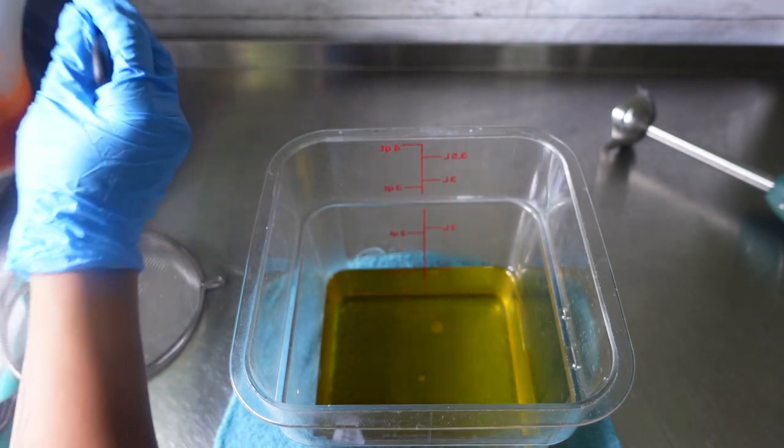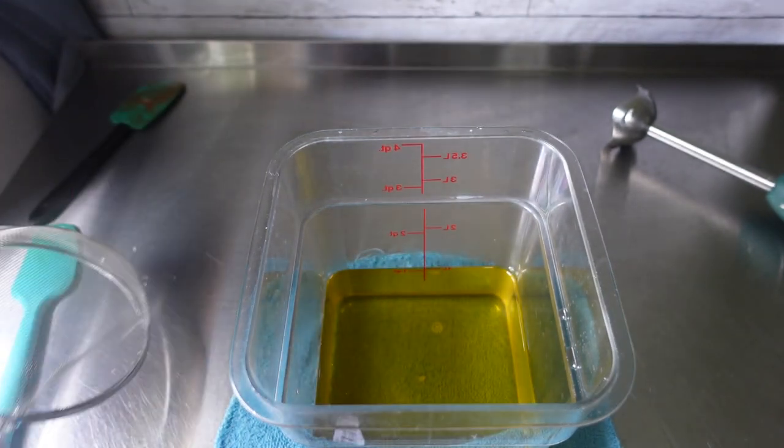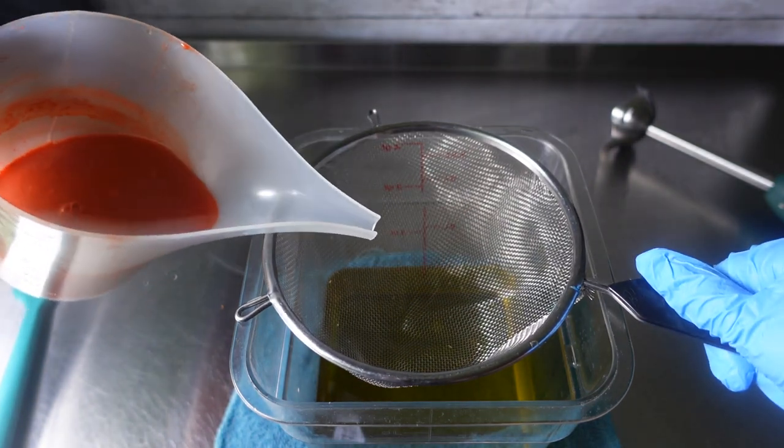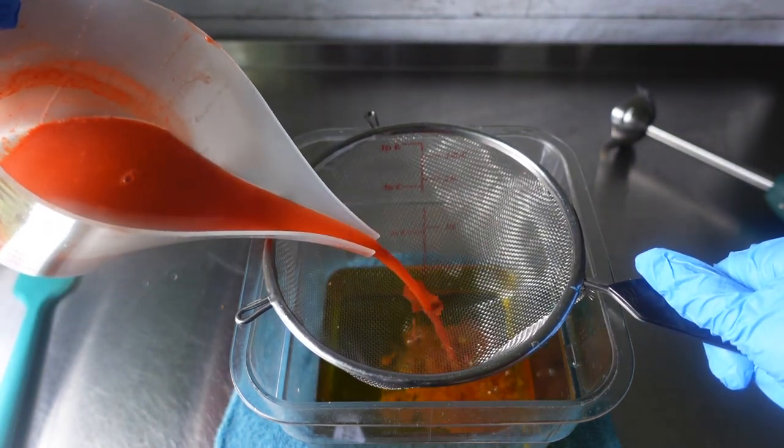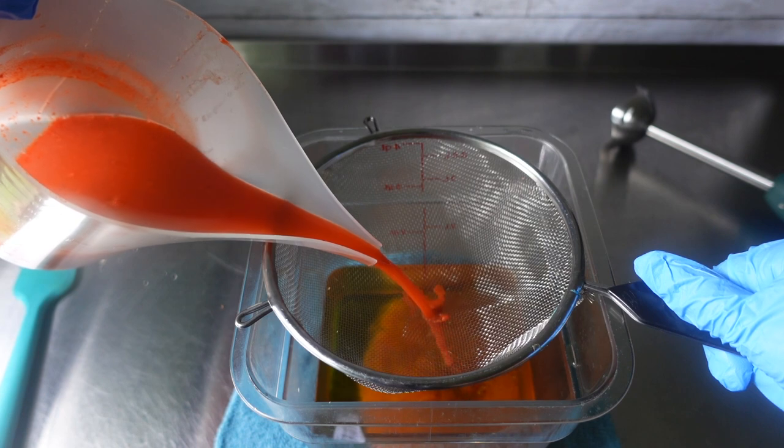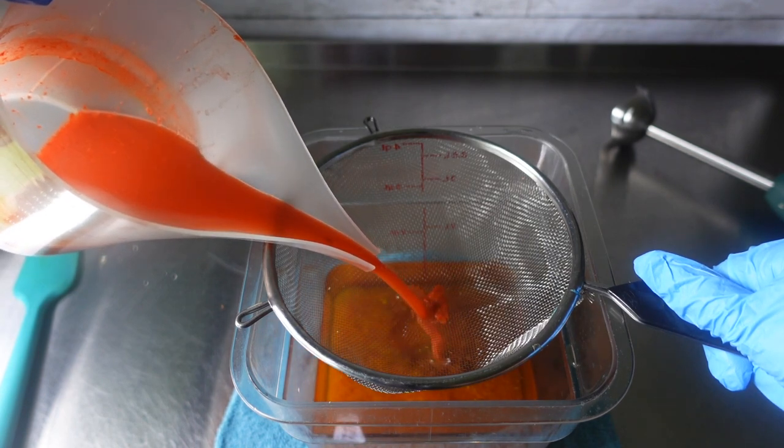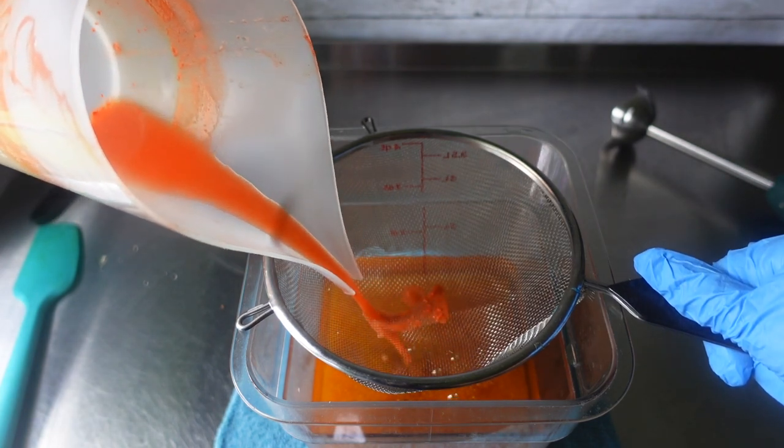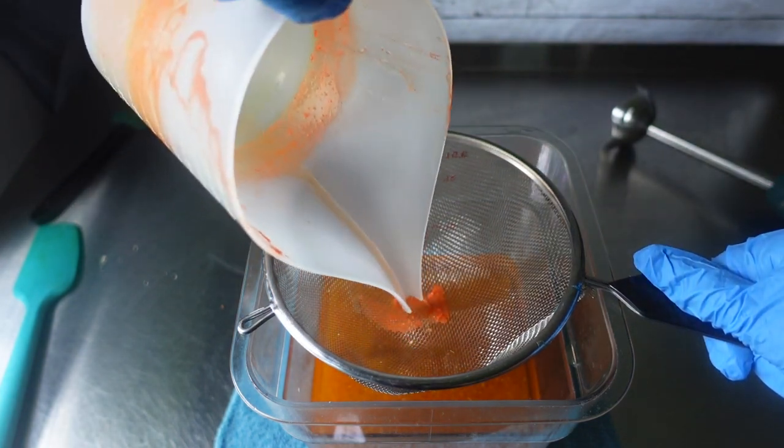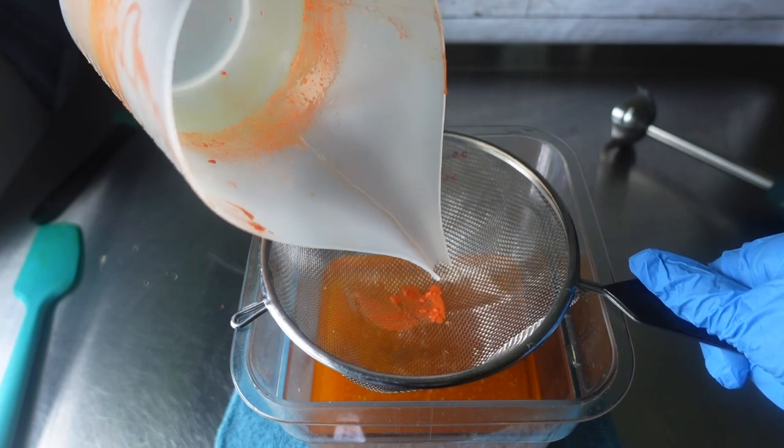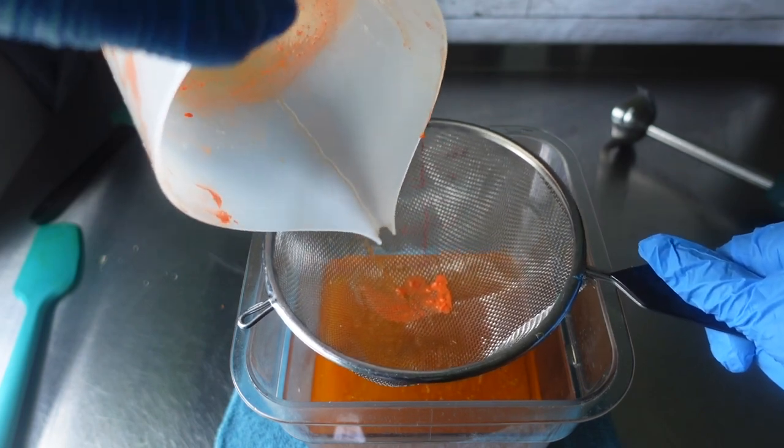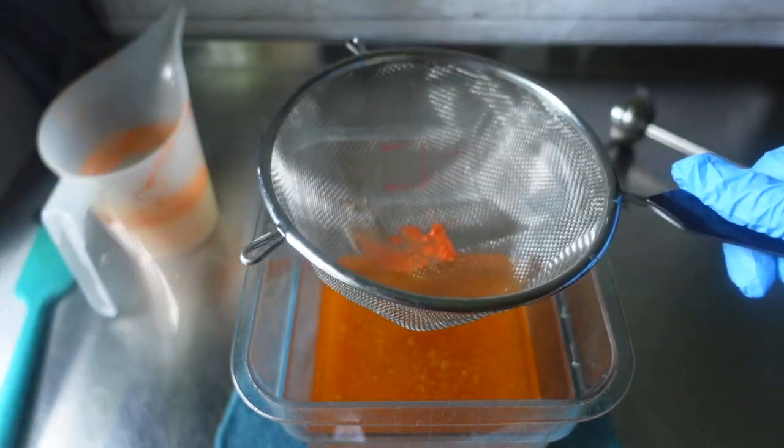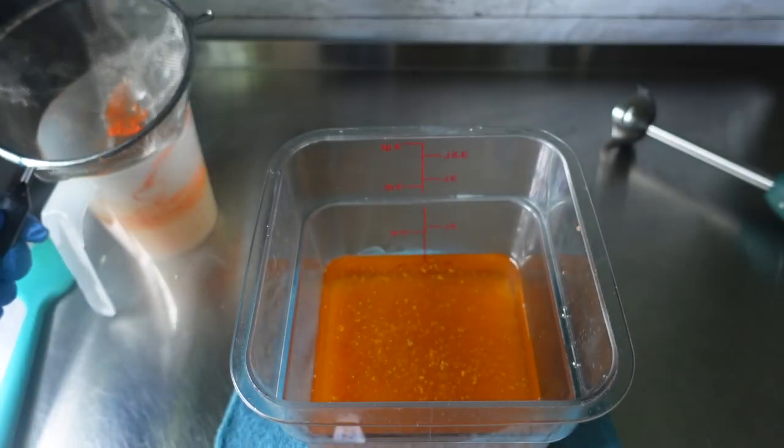Once my oils and my lye carrot juice solution was cooled down to room temp, I then added the lye and carrot juice into my oils. I am using the strainer so that way it can catch whatever that may still be in there, a little bit of pulp or whatever. Once I combine these two, I am just going to stick blend this until I reach my desired trace.